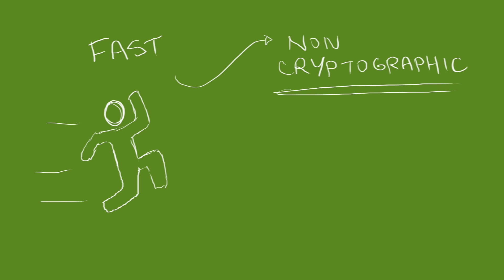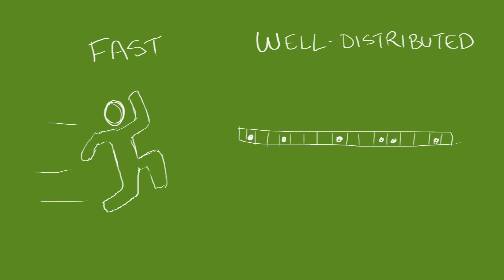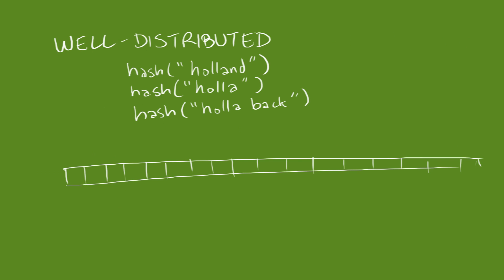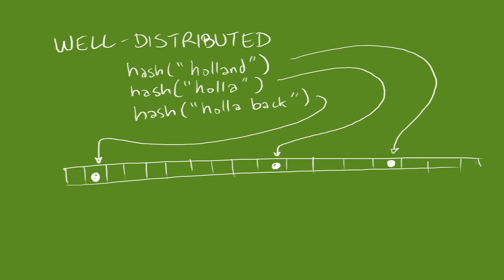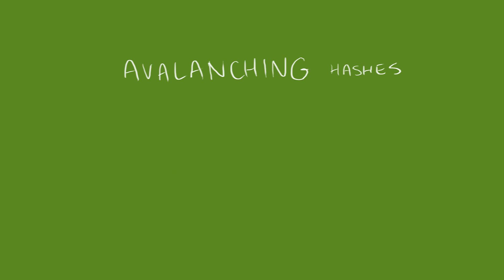When we say well distributed, what we mean is that no matter how similar your data is, there should be about an equal chance of those data appearing anywhere in your hash table. Hash functions that exhibit this quality are known as avalanching hashes, because small changes in the input lead to large changes in the output.